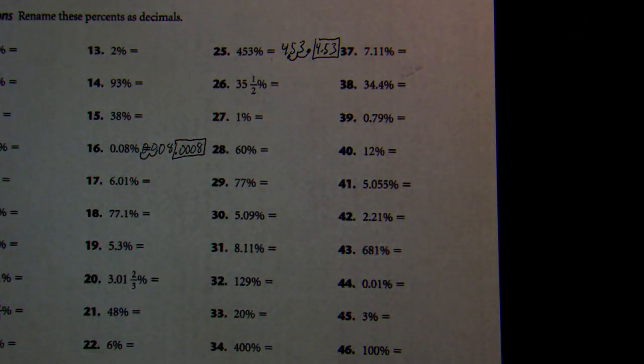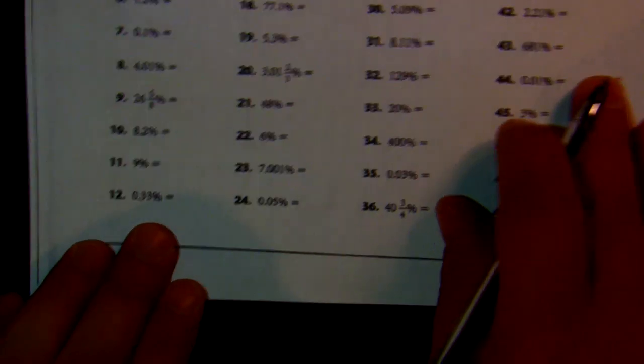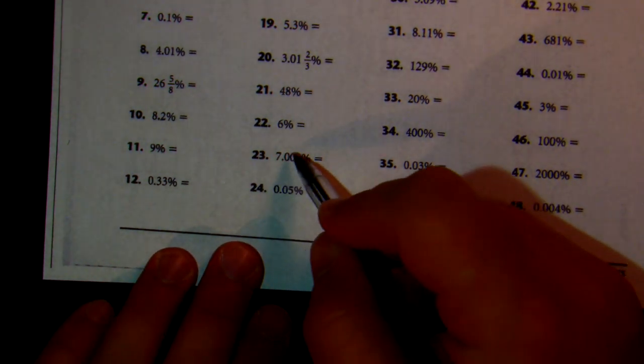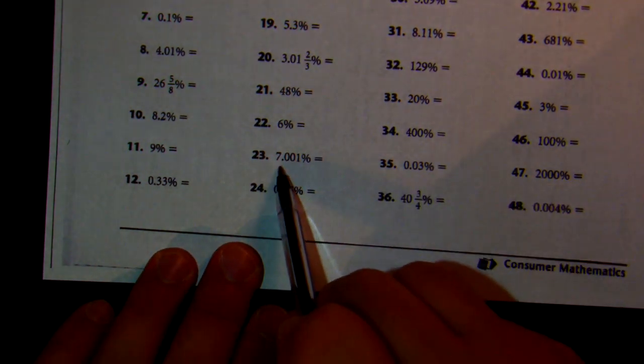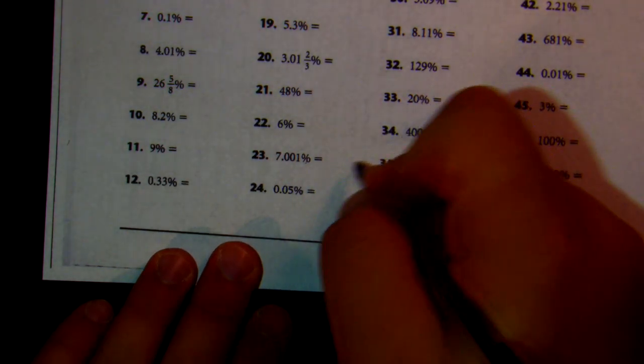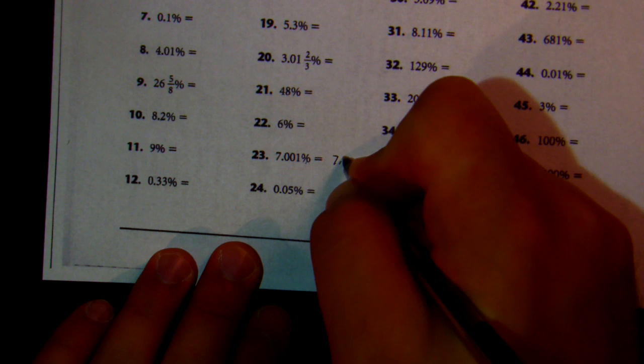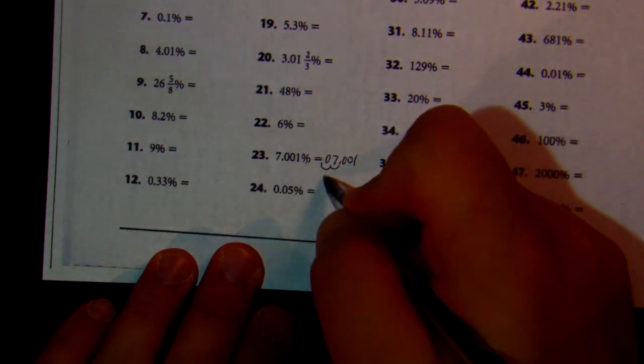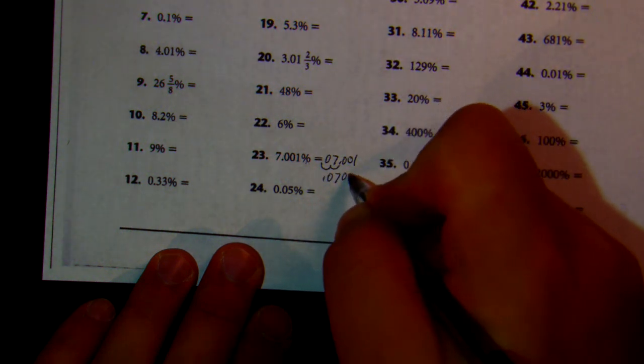Let's take a look at another one. Let's go ahead and take a look at 23. So 23, we're at 7.001 percent. I already have a decimal, so I don't need to change that into a decimal right now. So if I had 7.001, move it to the left twice, need one zero, so I'm at 0.07001.